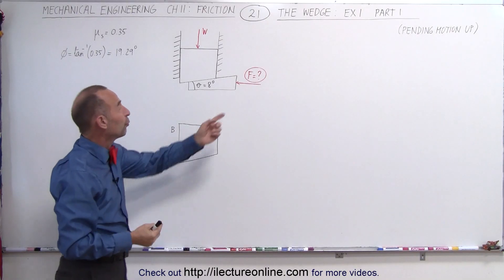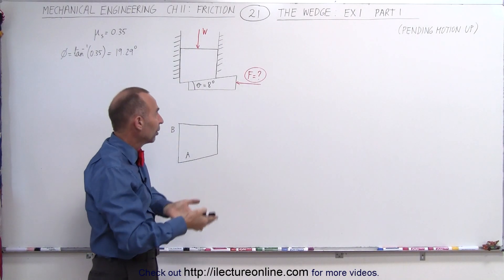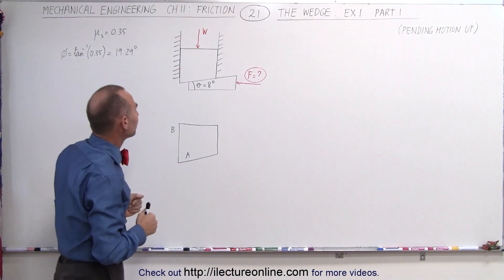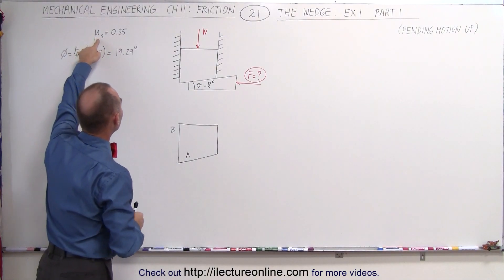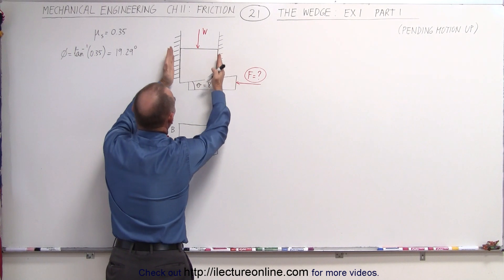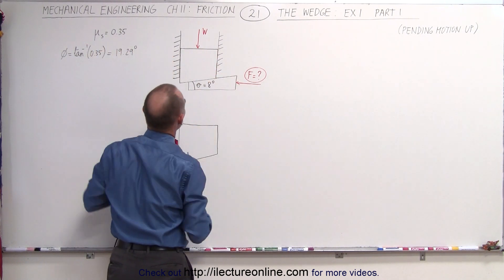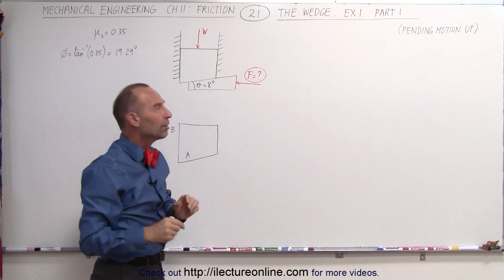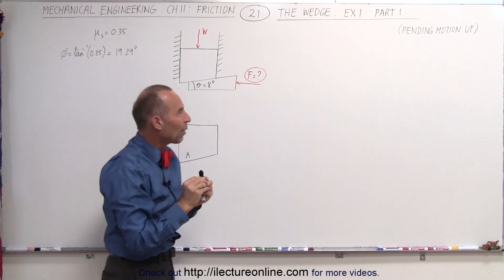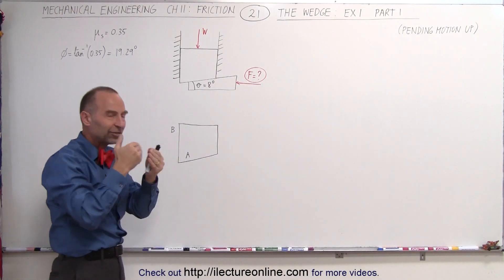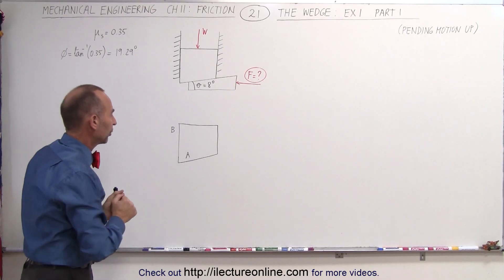The question is how much force will be required, in terms of the weight of the object, to push that object up. The coefficient of static friction between the object and the walls that hem it in is equal to 0.35. We're looking for the pending motion up — the force required to just reach the point where any additional force will cause the block to move upward.